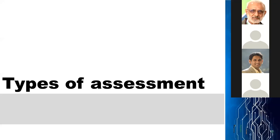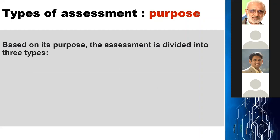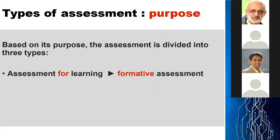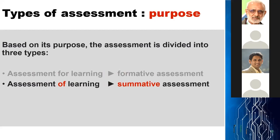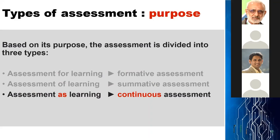Let us begin by clearing our concepts about continuous assessment. Based on its purpose, assessment can be divided into three categories. Number one, assessment for learning, which is formative assessment, meant to improve the knowledge of students by giving them feedback, and is conducted periodically. Number two, assessment of learning is summative assessment, meant to make a decision about the progression of the student to the next level of training, conducted at the end of the course. Number three, assessment as learning, or continuous assessment, is meant to improve skills, knowledge, attitude, and professionalism of students, and is conducted continuously.